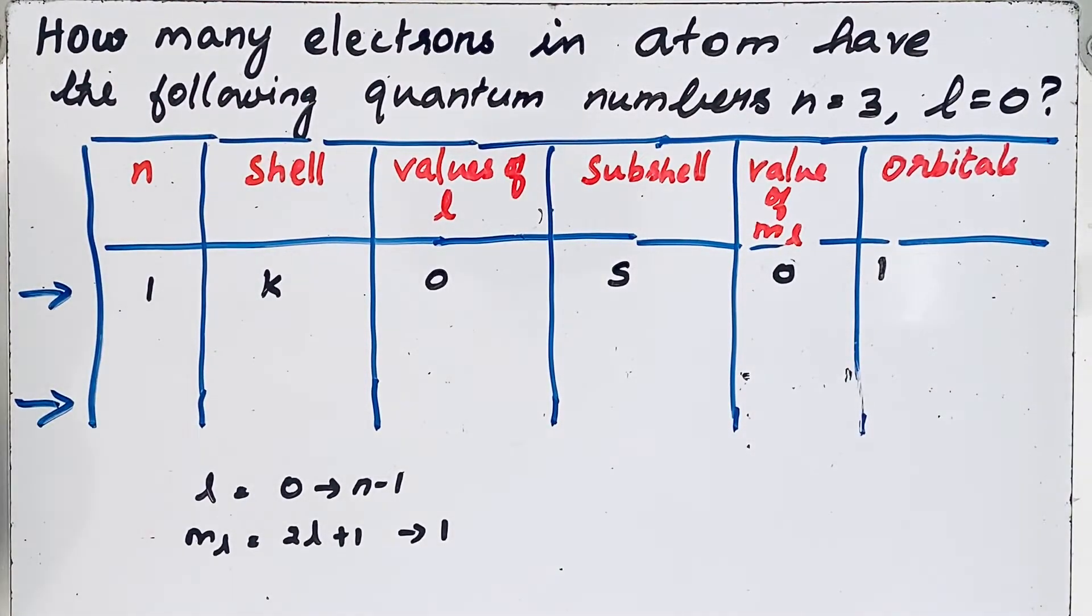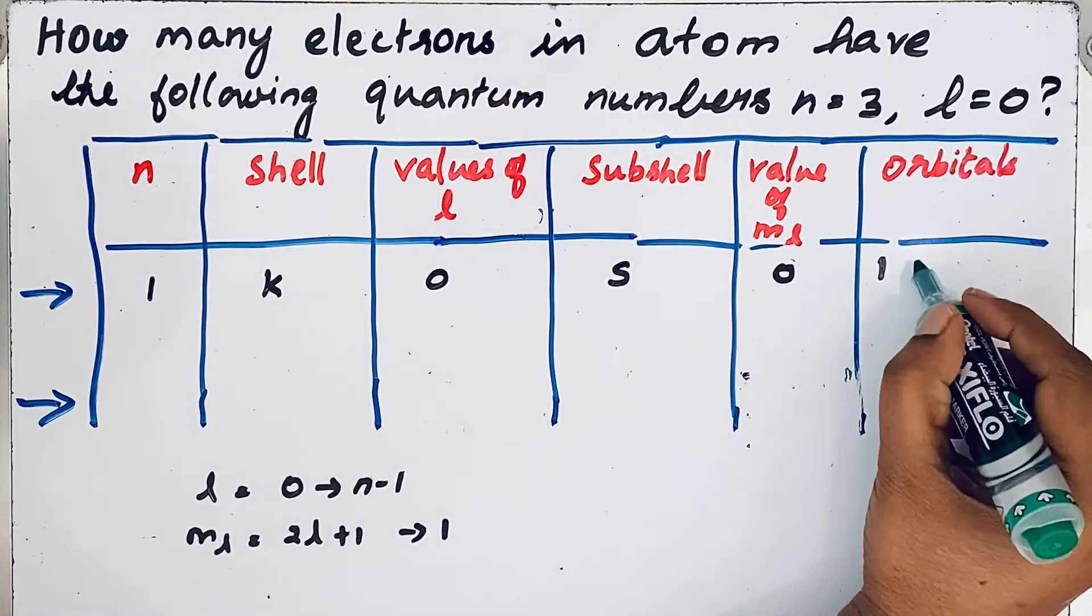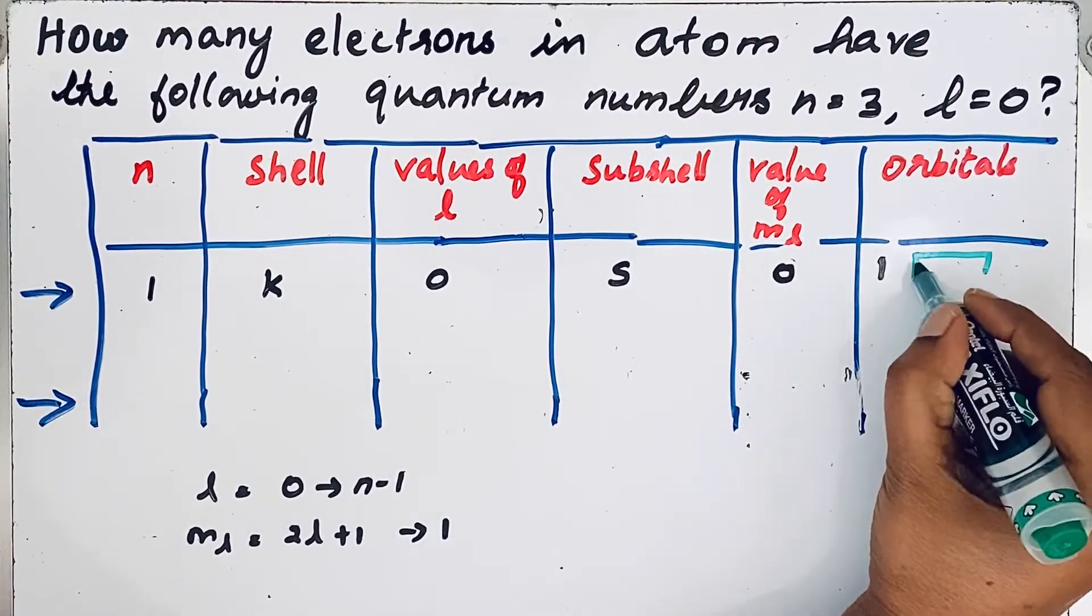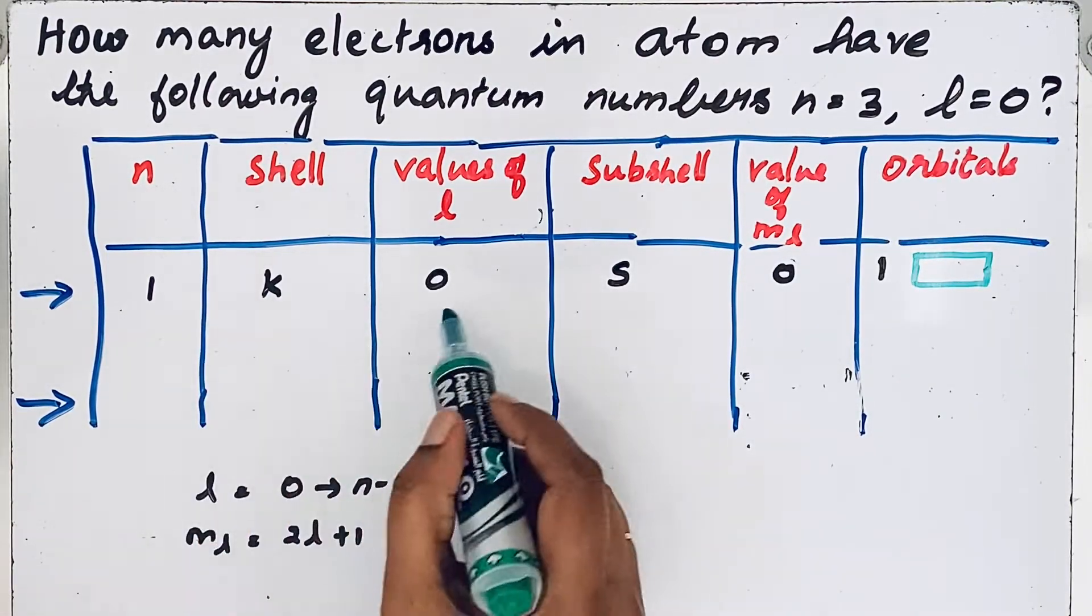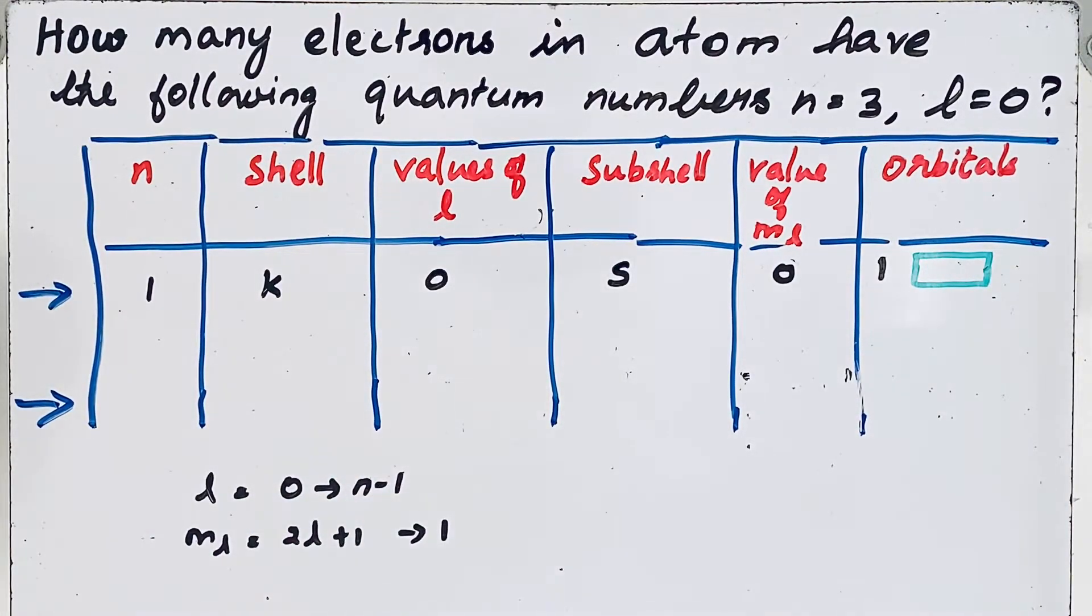For better understanding, let us use that box diagram for representing the orbitals. Only one orbital is present if n equals 1 and l equals 0. Now, come to our question.